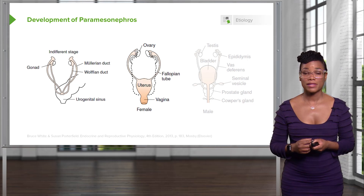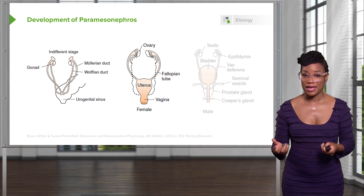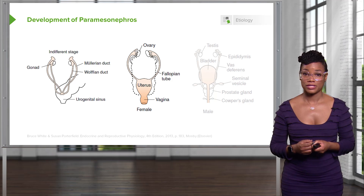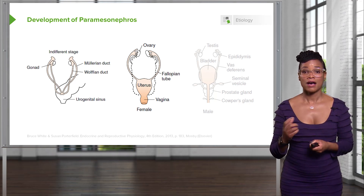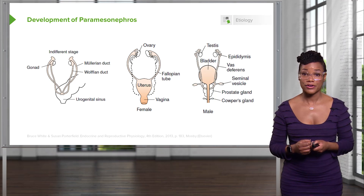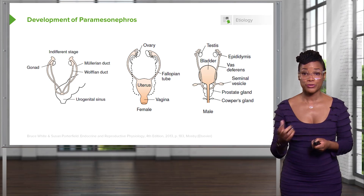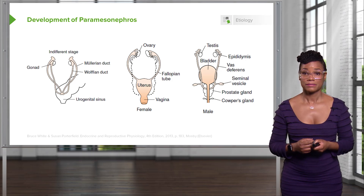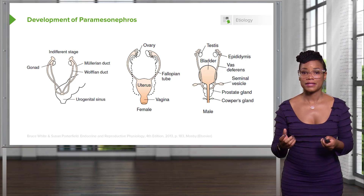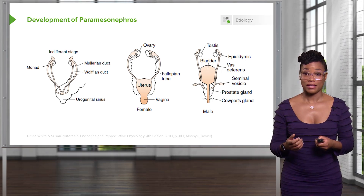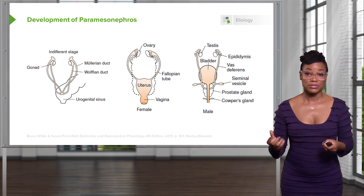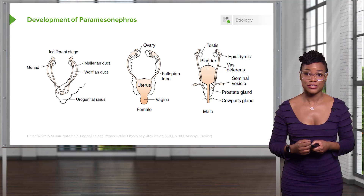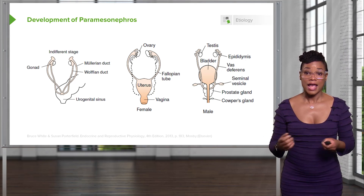Normally in the female, AMH is not produced by Sertoli cells, and therefore you make fallopian tubes, a uterus, and the upper third of the vagina. However, if you are male, AMH is produced from the Sertoli cells, and those Sertoli cells inhibit Müllerian development, or paramesonephros. In the male, mesonephric ducts lead to the epididymis, the vas deferens, and the urethra.